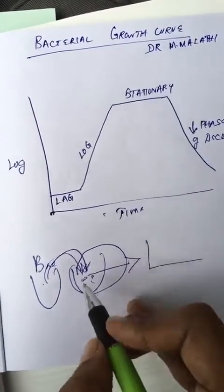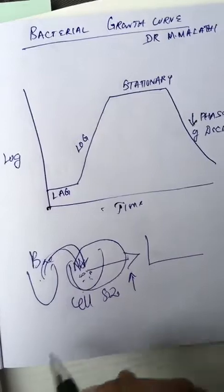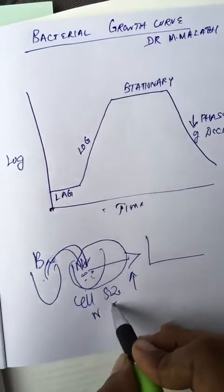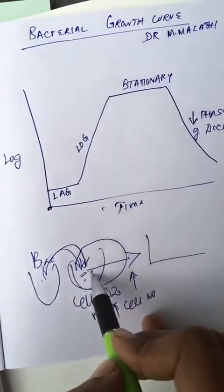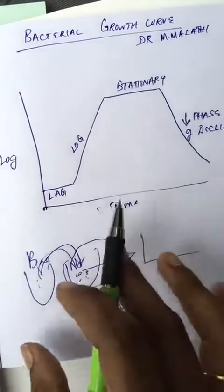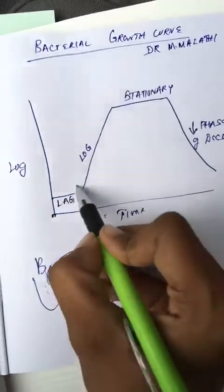In that period, only the cell size will be maximum. There will be no increase in cell numbers. Thus it is going into new medium and the maximum cell size will be attained, and it will be waiting to know what type of medium it is. That is called the adaptation period.